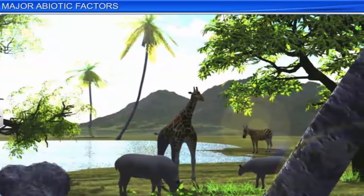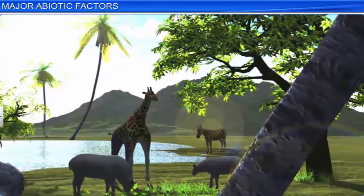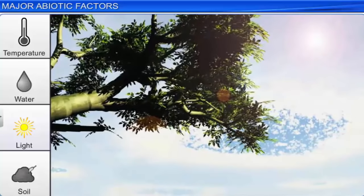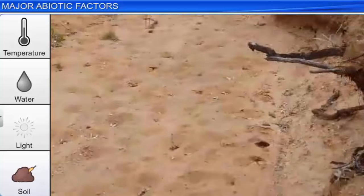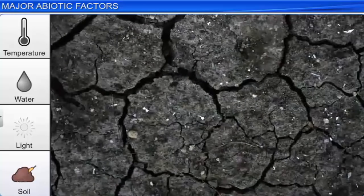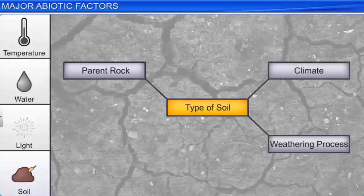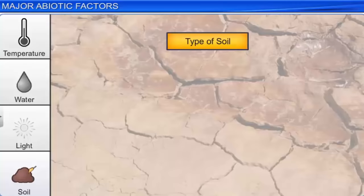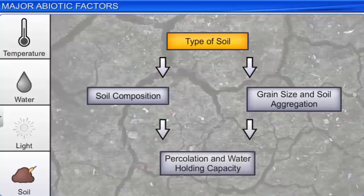Interestingly, as the sun is the source of both light and temperature, the availability of light on land is closely linked with the temperature at any given place. Just as plants require light and water for their survival, they also require soil, another important abiotic component. On earth, the nature and properties of soil vary in different places. The type of soil depends on the parent rock, climate, weathering process, how the soil is formed, and whether the soil is transported or sedimentary. Apart from these factors, various soil characteristics such as its composition, grain size, and soil aggregation determine its percolation and capacity to hold water.